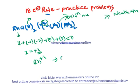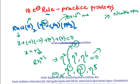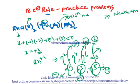An important rule: when hapticity is an even number (η², η⁴, η⁶), the net charge of that ligand is zero in both the oxidation state and neutral atom methods, so electron contributions are the same in both. When hapticity is odd (η¹, η³, η⁵), the ligand carries a −1 charge in the oxidation state method, contributing 2, 4, or 6 electrons respectively, whereas in the neutral atom method it contributes 1, 3, or 5 electrons.